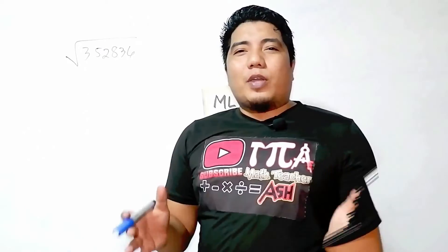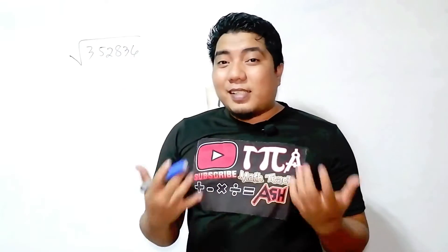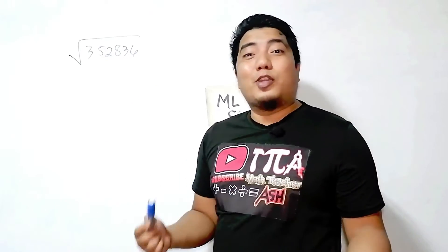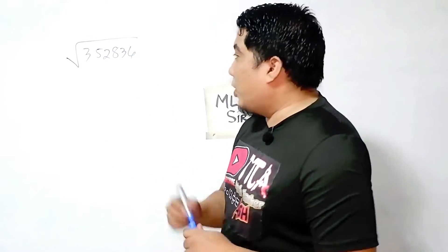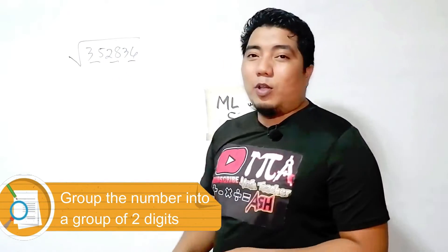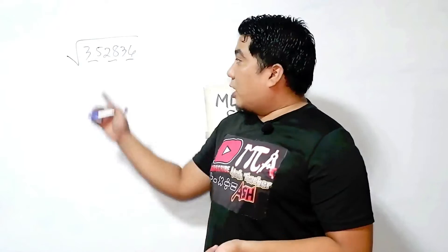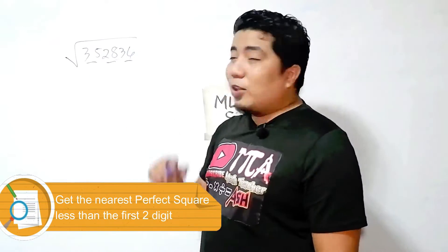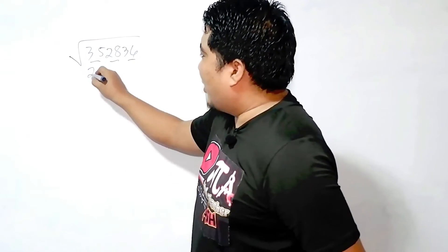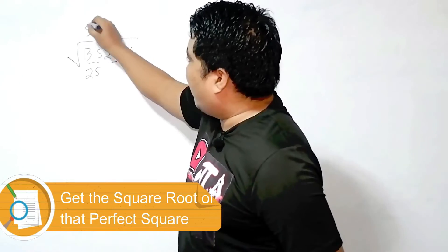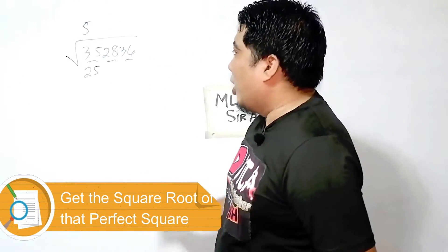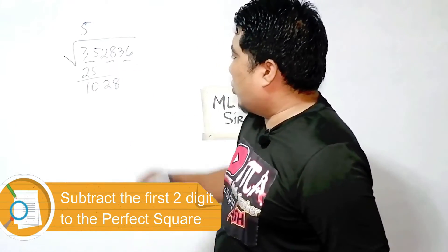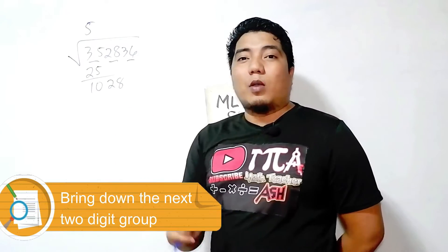Now let us consider the second problem. We have here our second six-digit number. What is the square root of 352,836? The first thing you do is group them by two digits: 35, 28, and 36. We start with 35. What is the nearest perfect square that is less than 35? That is 25. The square root of 25 is 5, so you have your first digit. By subtracting, you will have 10, and then you bring down the next two digits, giving you 1,028.